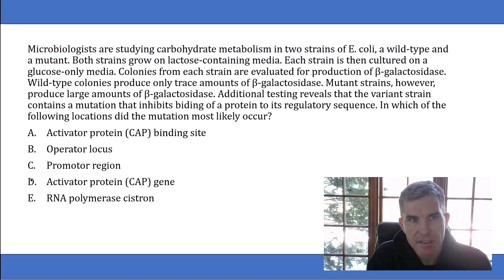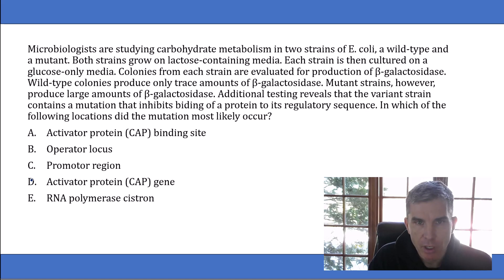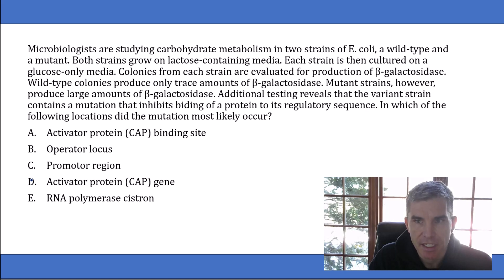The question says that microbiologists are studying carbohydrate metabolism in two strains of E. coli, a wild type and a mutant. Both strains grow on lactose-containing media. Each strain is then cultured on a glucose-only media. Colonies from each strain are evaluated for production of beta-galactosidase. Wild type colonies produce only trace amounts of beta-galactosidase.